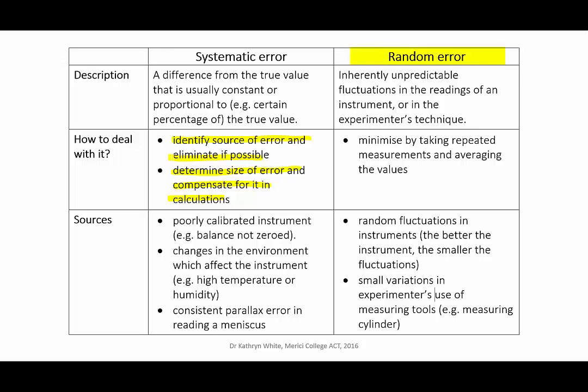Random error, on the other hand, is random. The readings are not consistently bigger or smaller than the true value, but will be all over the place. They're caused either by inherent fluctuations in your measuring instrument, or perhaps by some inconsistency in the way that you take your measurements.